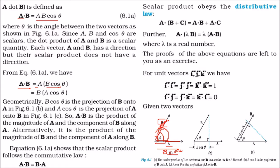The scalar product is commutative: a·b = b·a. It also obeys the distributive law: a·(b + c) = a·b + a·c. And a·(λb) = λ(a·b), where λ can be any real number.